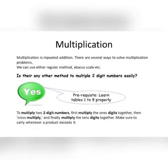To multiply two two-digit numbers, first multiply the ones digits together. Then cross multiply, and finally multiply the tens digits together. Make sure to carry whenever a product exceeds nine.